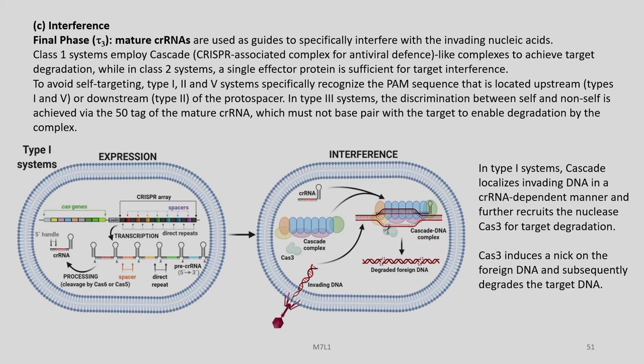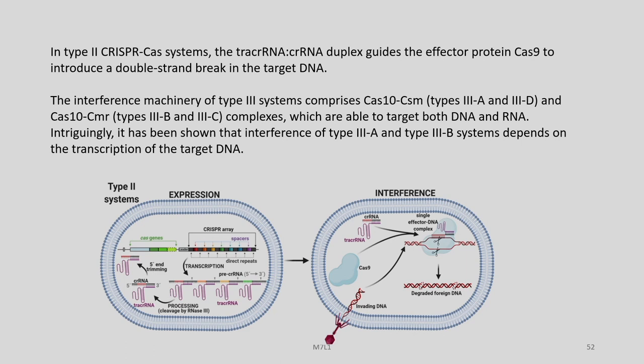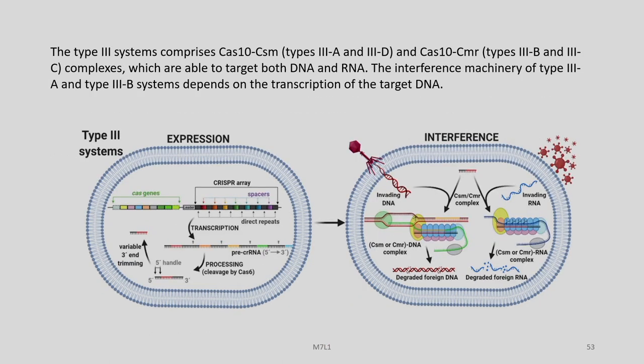In the type II Cas system, the tracer RNA–crRNA duplex guides the effector protein Cas9 to introduce a double-stranded break in the target DNA. The interference machinery of type III systems comprises Cas10-CSM (type IIIA and IIID) and Cas10-CMR complexes, which are able to target both DNA and RNA. It has been shown that the interference of type IIIA and type IIIB systems depends on the transcription of the target DNA.